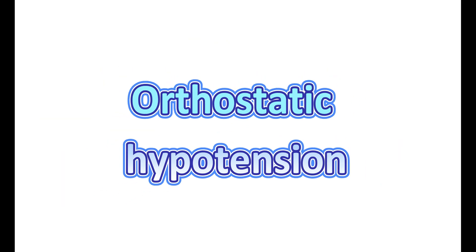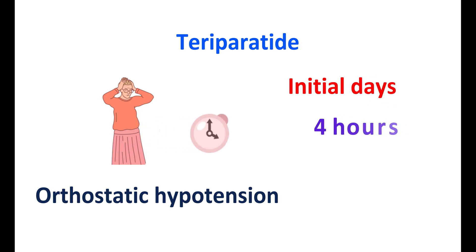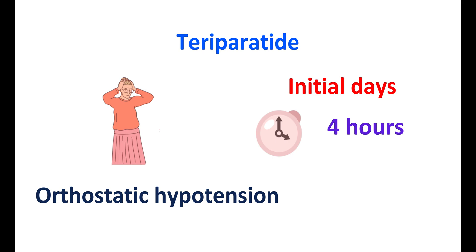Teriparatide can produce orthostatic hypotension — a drop in blood pressure with changes in posture. This can be observed within the initial days of therapy and typically occurs within four hours after administration, after which it slowly resolves. Blood pressure should be closely monitored within this four-hour window. After several days of therapy, this side effect gradually diminishes.